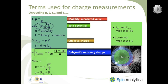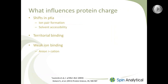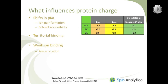Now the charge on a protein is not simply the charge you would calculate from an isoelectric point determination and the pH. Several things can influence it. The first is the shift in pKa. If you look at ribonuclease SA, the calculated charge is minus 7.3, but the Debye-Hückel-Henry charge that is measured is minus 5.1. The calculation is what you would expect based on the isoelectric point and the pH.